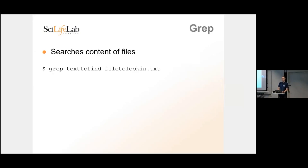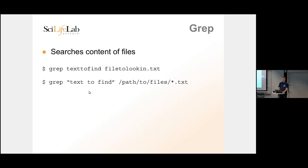Sometimes you're not looking for a filename but for content inside a file — for example, finding a script where you remember a variable name. For this you use 'grep'. The syntax is: grep 'text to find' filename. If your search text has multiple words, put them in quotes, otherwise the spaces will be interpreted as argument separators. You can also use wildcards for the filename, like '*.txt' to search all text files.